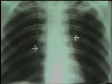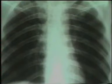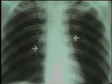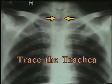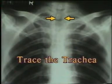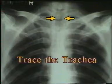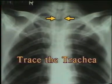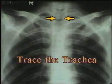Then study the hila, represented by the shadows of the hilar vessels. The left hilum is normally at a slightly higher level than the right. Lastly, identify the course of the trachea up to the carina for any deviation. This completes the inspection of the lung fields.